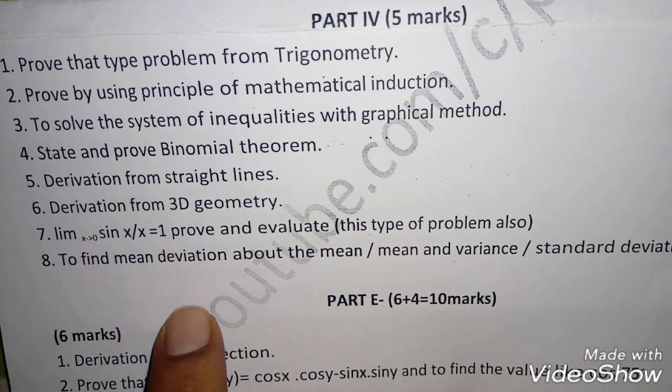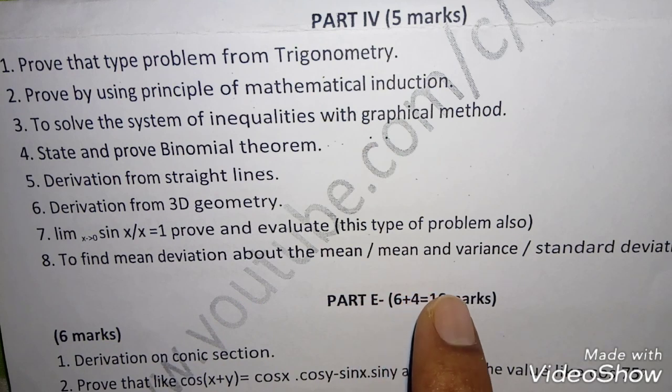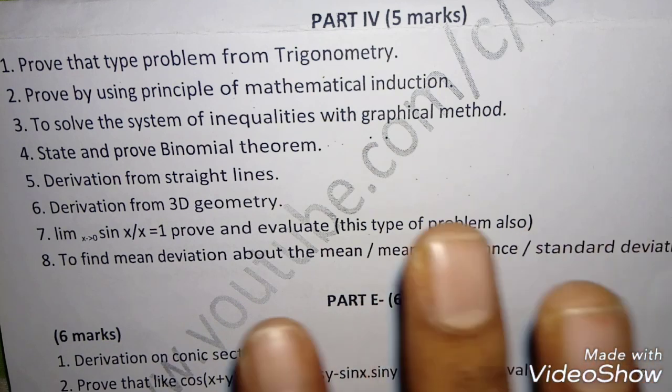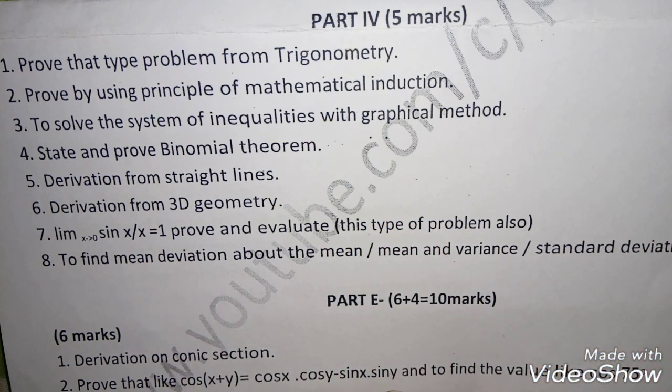Finally, we have to find the mean deviation from statistics about the mean and mean and variance and the standard deviation. So the last part is of 2, that is 6 plus 4. One question should be 6 and the B question will be 4 marks.